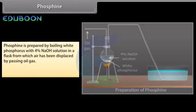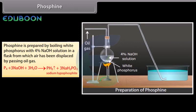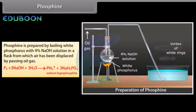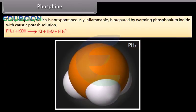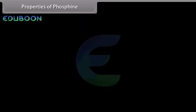Phosphine is prepared by boiling white phosphorus with 4% NaOH solution in a flask from which air has been displaced by passing oil gas. Oil gas is continuously bubbled through the flask to displace air. The PH3 obtained contains considerable amounts of H2 and a little P2H4 and is inflammable in air. Impure phosphine bursts into flames on contact with air, forming vortex rings of white P4O10. Pure phosphine, which is not spontaneously inflammable, is prepared by warming phosphonium iodide with caustic potash solution.